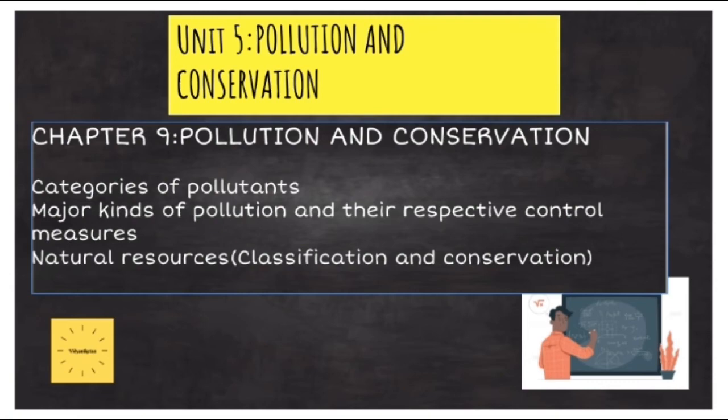The fifth unit is called Pollution and Conservation. In this unit too, we have a single chapter where we will be studying about the categories of pollutants, the major kinds of pollution and their respective control measures. And finally, we will be studying about natural resources, their classification as well as conservation.